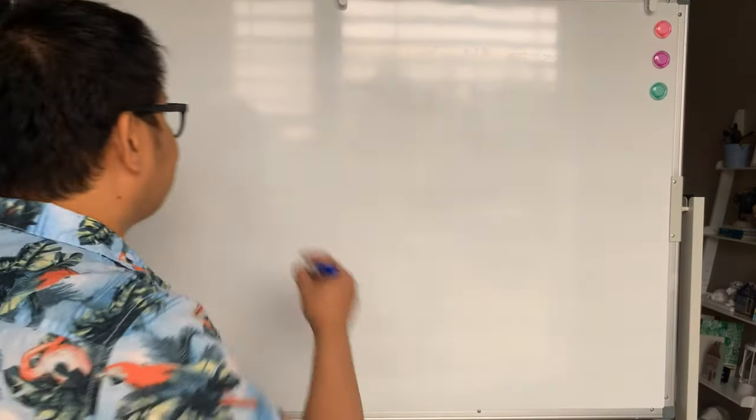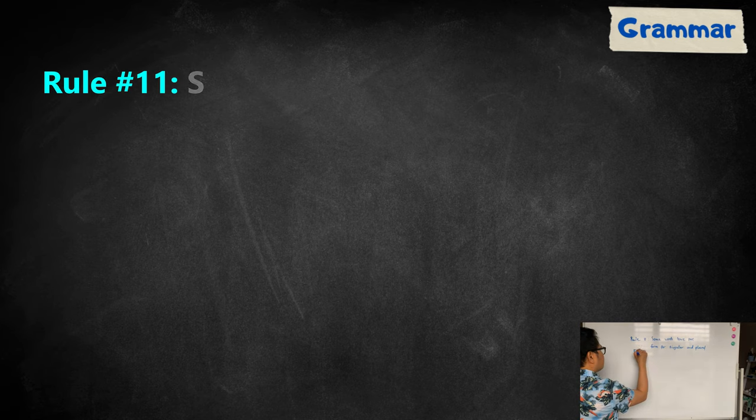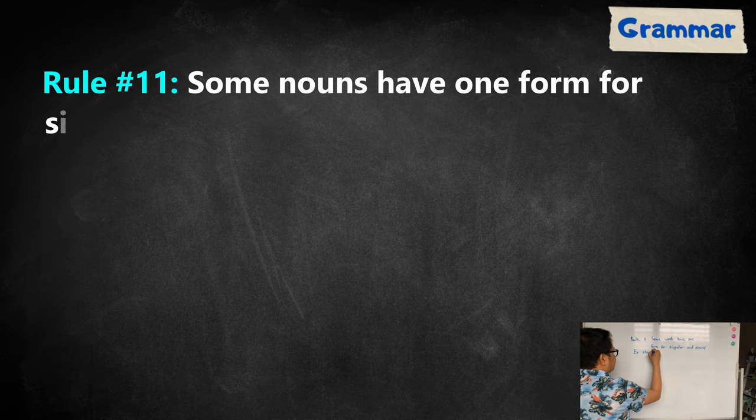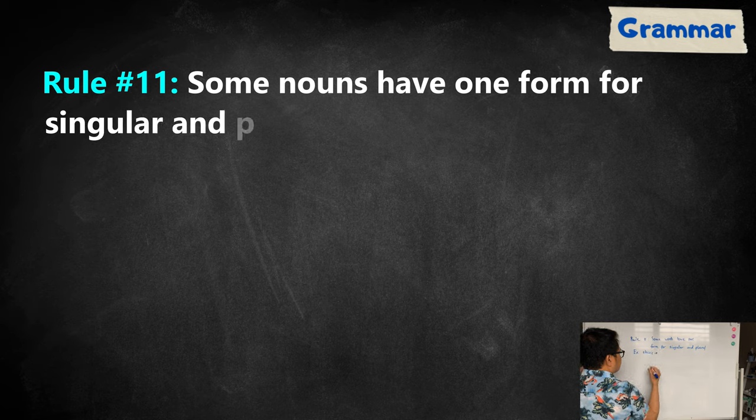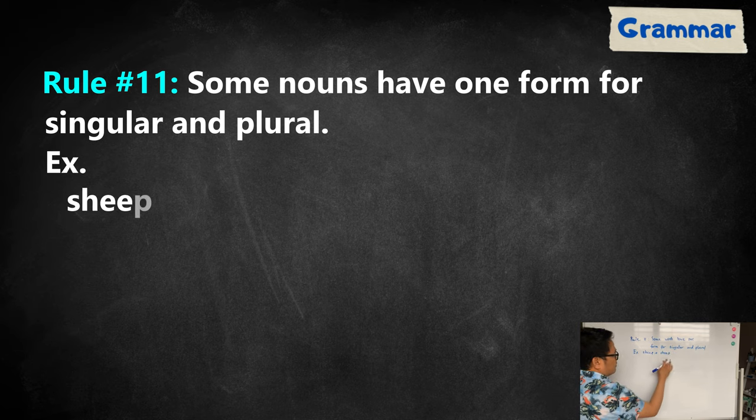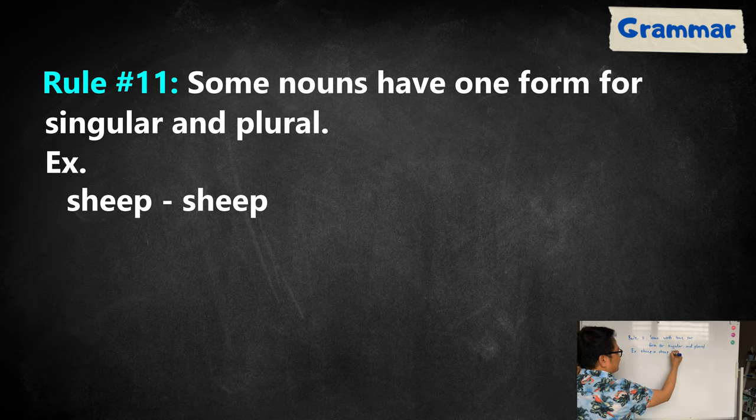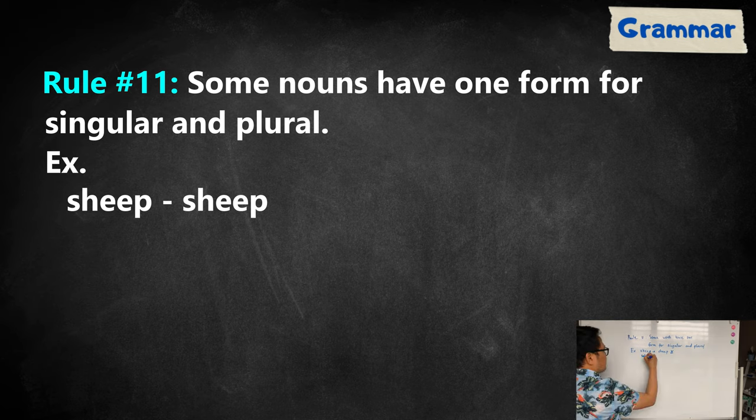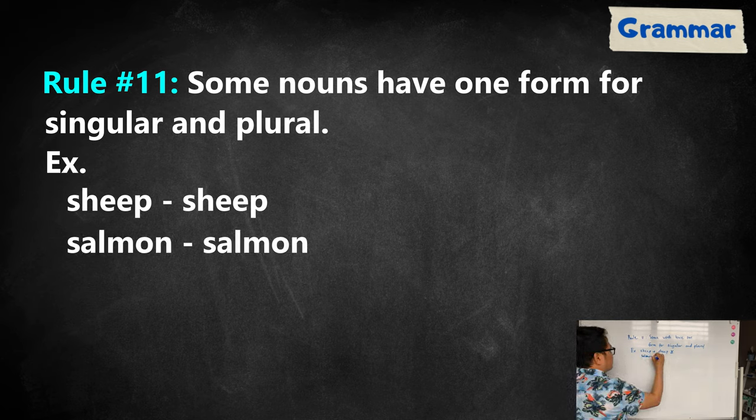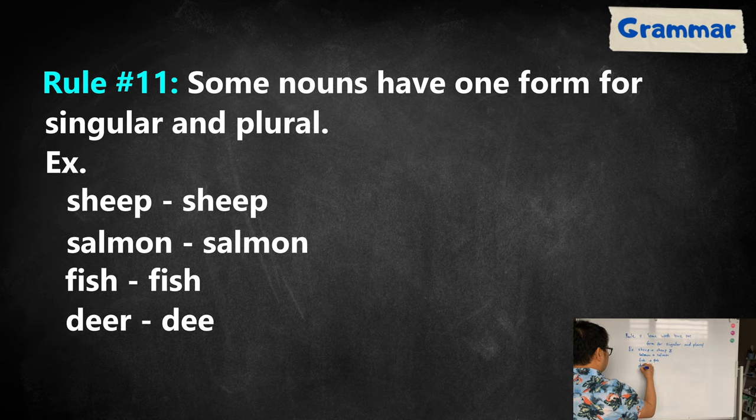For rule number eleven, some words have one form for singular and plural. For example, sheep, singular form of sheep is sheep, just the same. You don't need to put s at the end of the word. Salmon, salmon. Fish, fish. Deer, deer.